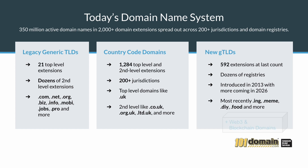Finally, there are Web3 or blockchain domains. These are relatively new and highly unregulated. There is expected to be a proliferation of these names as we move forward. The number of options are unknown and unpredictable.